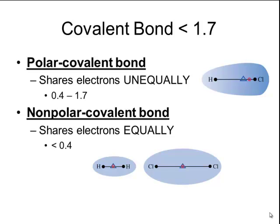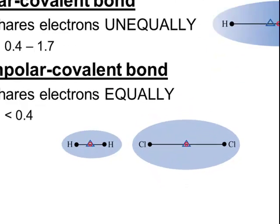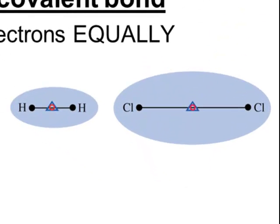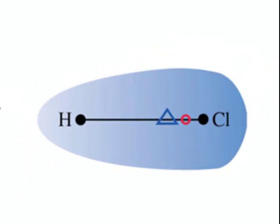A nonpolar covalent bond has an electronegativity difference of less than 0.4. In these compounds, the electrons are shared equally. Notice the electron clouds of the hydrogen molecule and the chlorine molecule are evenly distributed between both atoms. The triangle in these pictures represents the center of the negative charge, and in both the hydrogen and chlorine molecules that triangle is in the center, showing the electrons are equally shared. Whereas in hydrogen chloride, that triangle is off-center — most electrons hang out more towards the chlorine — and that's what makes it polar.